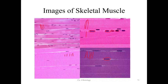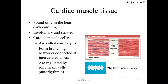Now cardiac muscle is found in the myocardium of the heart. It is involuntary — meaning you can't control it — and it is striated. Striations are present and seen very well in the diagrams.